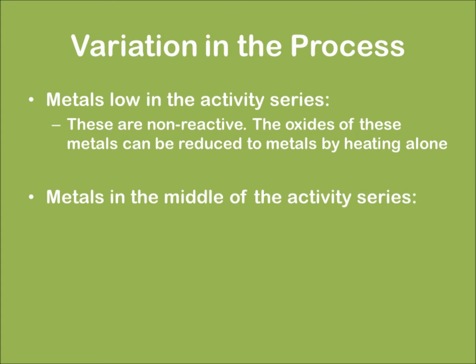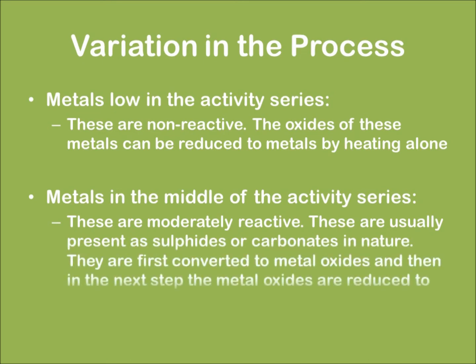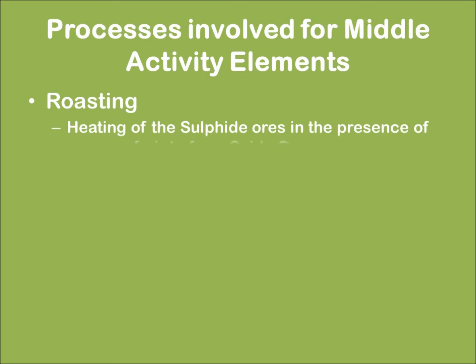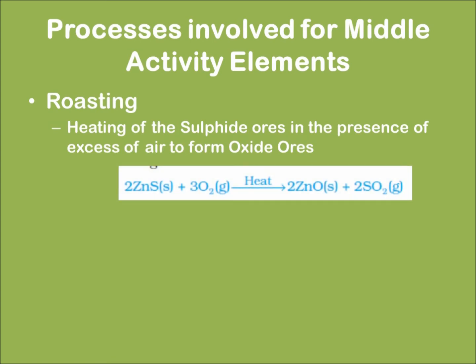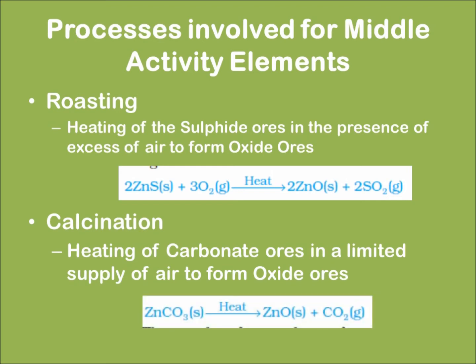For metals lying in the middle region of the activity series, being moderately reactive, these are usually present as sulphides or carbonates in nature. They are first converted to metal oxides and then reduced to the metal. The processes involved include roasting — heating of the sulphide ore in the presence of excess air to form an oxide ore — and calcination, which is heating of the carbonate ore in a limited supply of air to form an oxide ore.